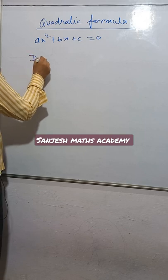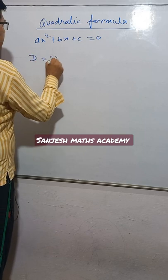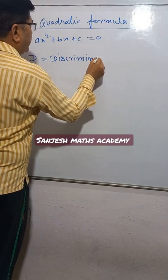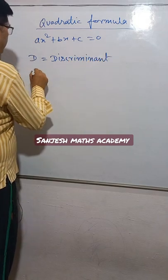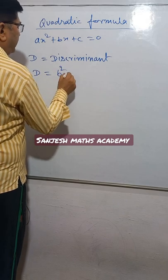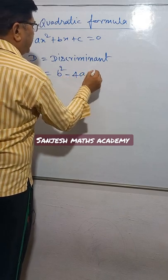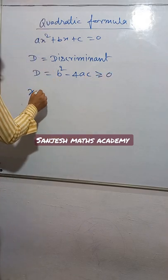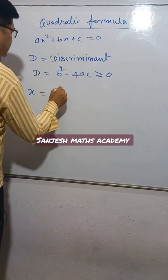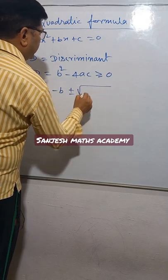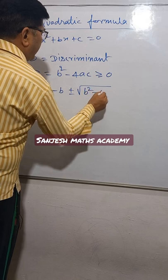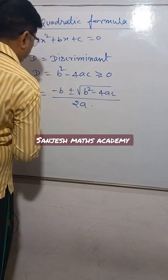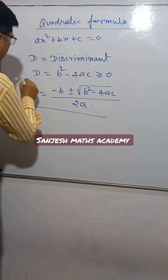D is equal to... D means discriminant. D is equal to B² minus 4ac, and must be greater than or equal to 0. X is equal to the quadratic formula: minus B plus or minus under root of B² minus 4ac, upon 2a. This is the quadratic formula.